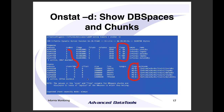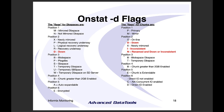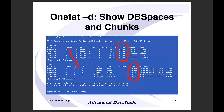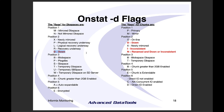'onstat -d' shows you your DB spaces. Every DB space gets a unique number and every chunk gets a unique number — DB space 5 relates to chunk 5. You can see the size, how much is free, and the flags. The flags are really important: the key flag for DB spaces is 'd' for down. If you ever see a 'd' in position 2, that DB space is down. Chunk flags similarly use 'd' for down and 'i' for inconsistent.